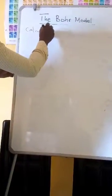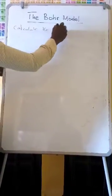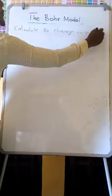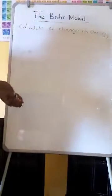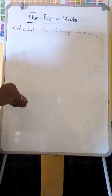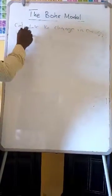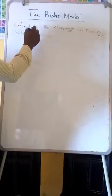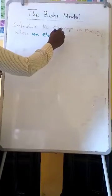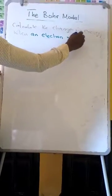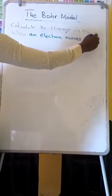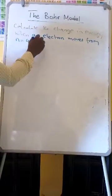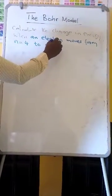As an example, let's calculate the change in energy when an electron moves from n equal to 4 to n equal to 2.